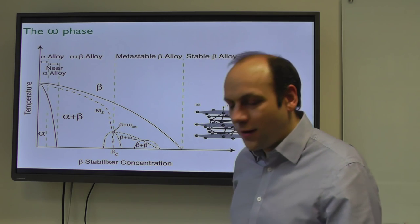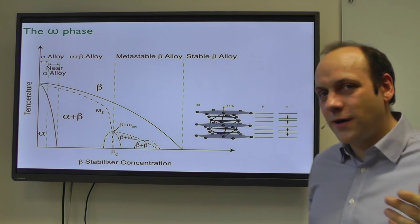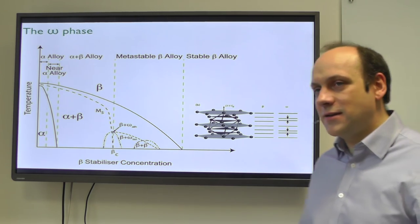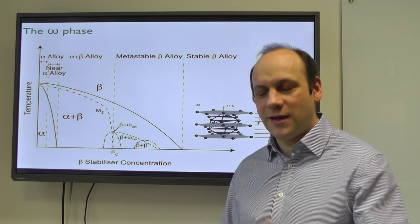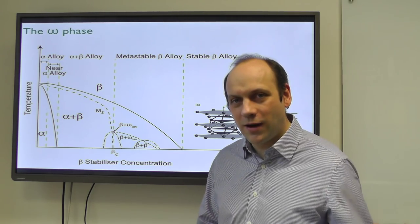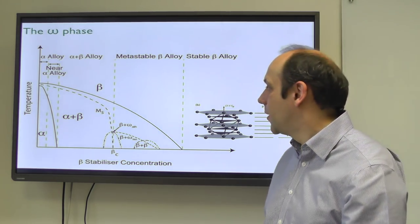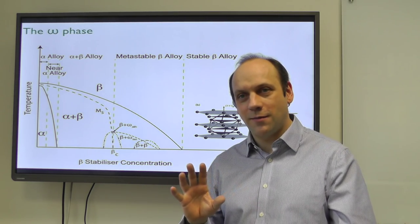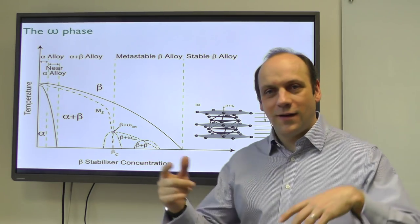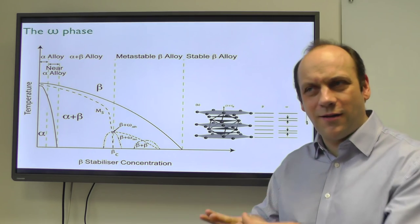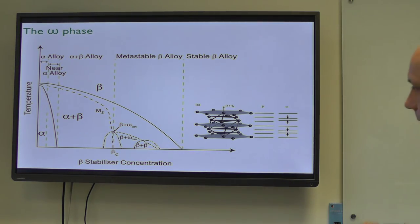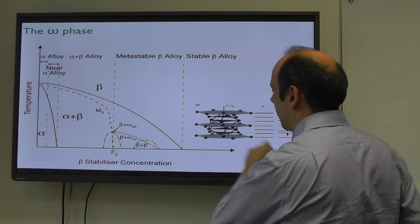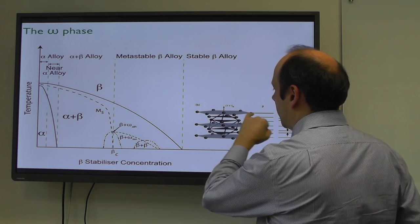One line of thought about how these structures work involves the omega phase. The omega phase is the high-pressure phase of titanium - on a pressure-temperature phase diagram, at 40 GPa and above in pure titanium there is another phase called omega. It is a hexagonal phase with a c/a ratio of two-thirds, compared to the normal hexagonal close-packing c/a ratio of around 1.5. So it's like an inverted hexagonal packing. The way it forms is by taking the 1-1-1 planes of the beta phase BCC crystal and collapsing two intermediate layers into one to form another hexagonal close-packed plane.